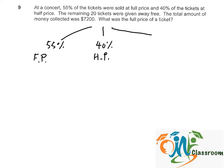And the remaining, it has to be 100% minus 55% minus 40%, that will give us 5%. So, 5% were given away for free, and 5% means 20 tickets.